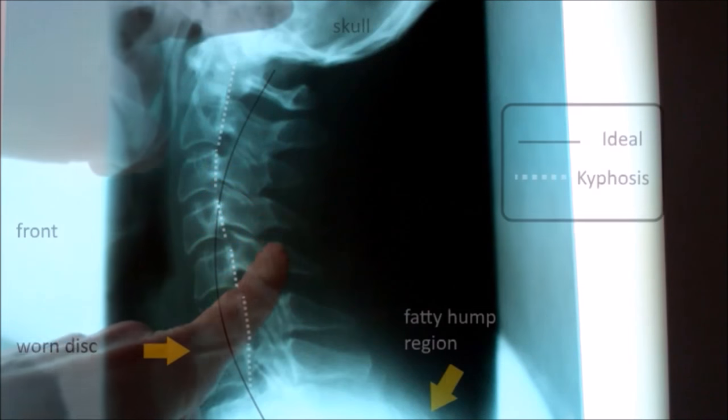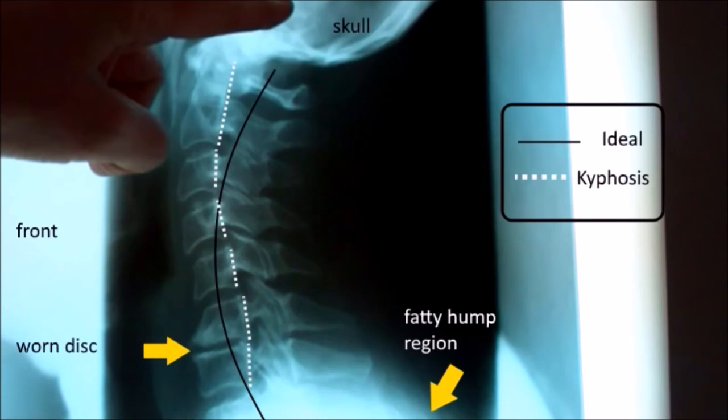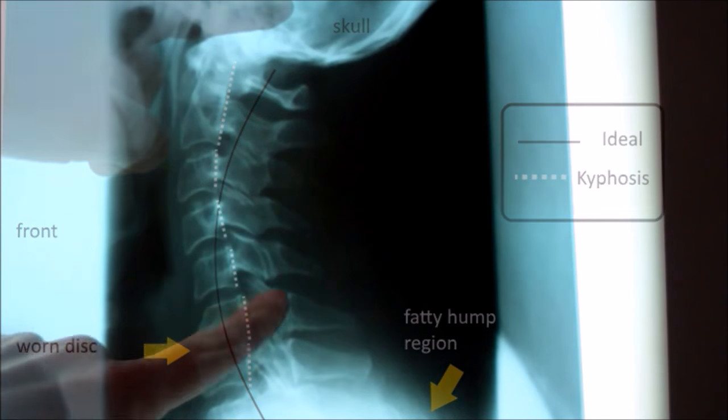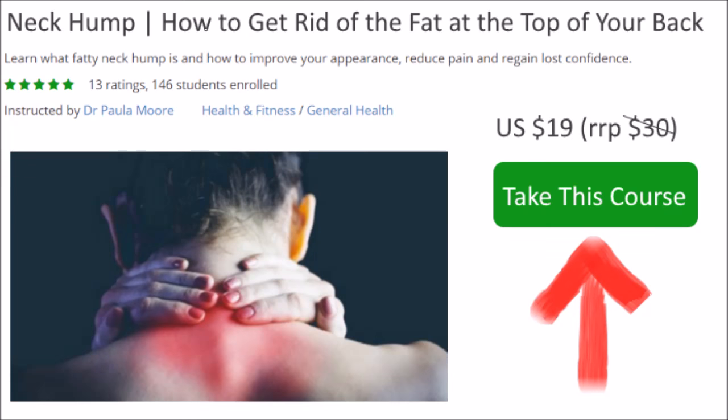Now ideally we would have a nice C shape all the way down, but in this particular individual we've got a C shape and then a kink. And this is the problem — this is what's giving this person their neck hump. This is where the spine is kinking the wrong way.